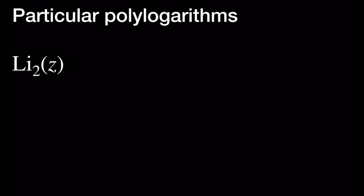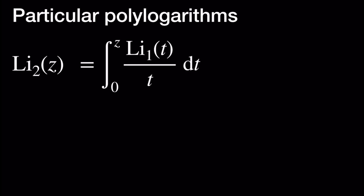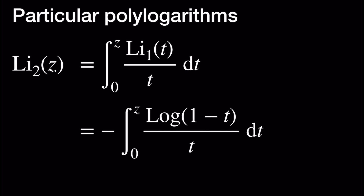Before we look at properties, let's express Li sub 2 in terms of logarithms. Li sub 2 at Z is equal to the integral from 0 to Z of Li sub 1 at T divided by T, dT. We just saw that Li sub 1 at T is equal to negative log of 1 minus T, so this is equal to the integral from 0 to Z of negative log of 1 minus T over T, dT.